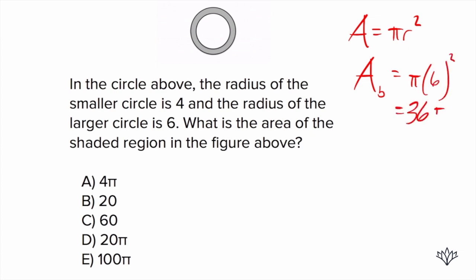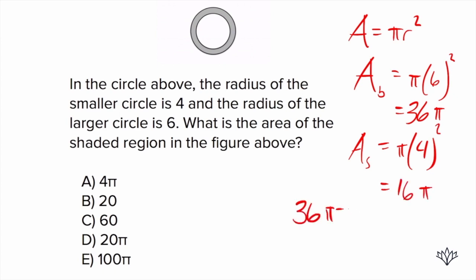Then we find the area of the smaller circle. For the smaller circle, the radius is four. So we do π times four squared, which is 16π. So we do 36π minus 16π, and that leaves us with our shaded region, which would be 20π — answer choice D.